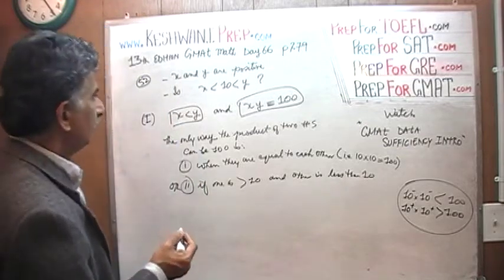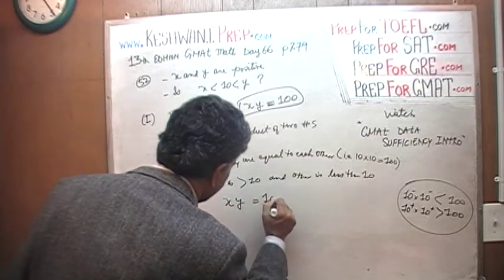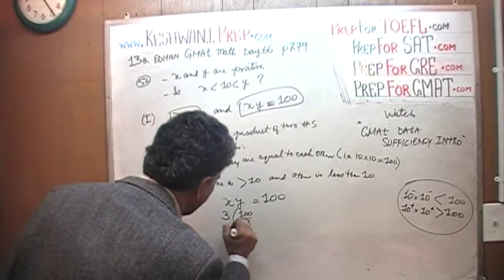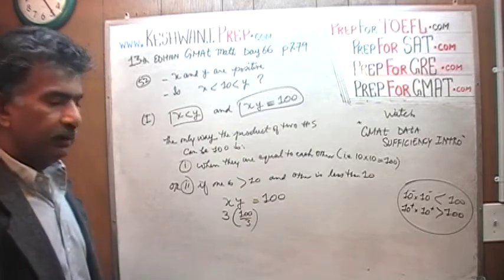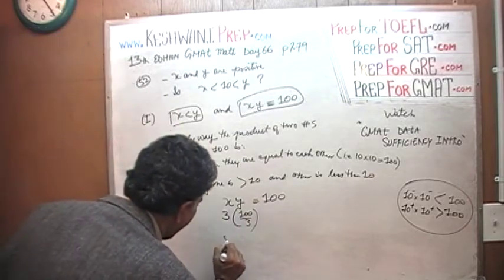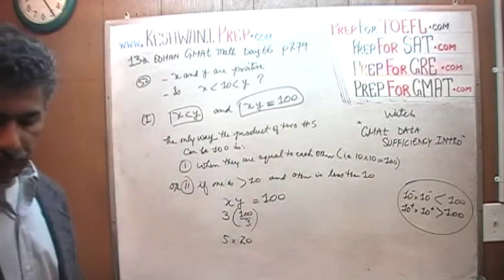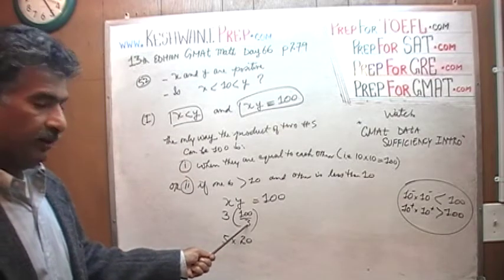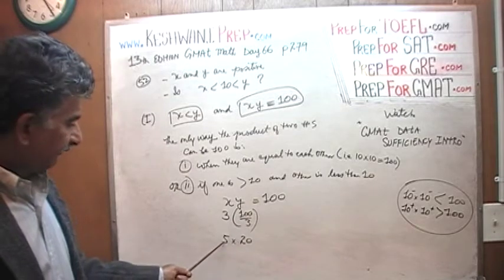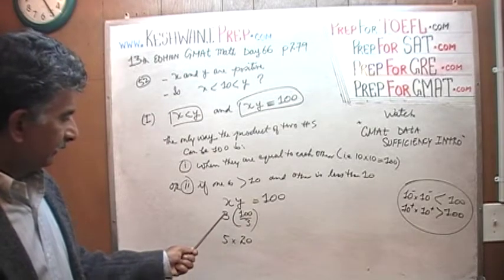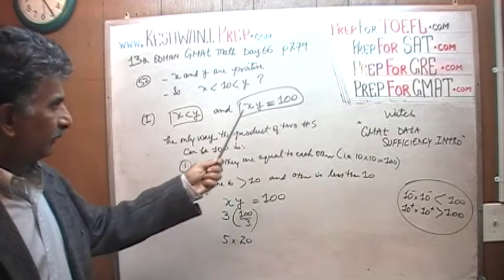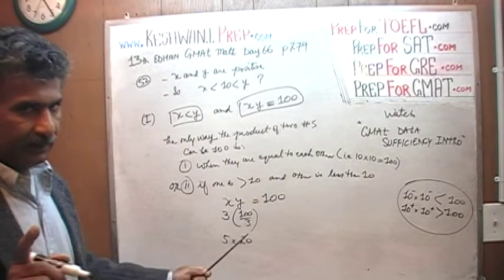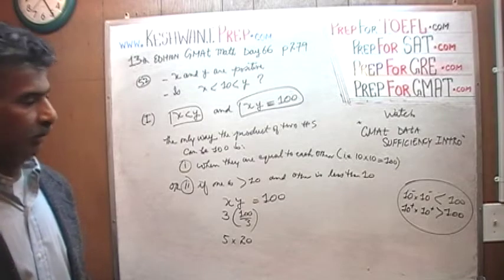For example, we know the product is 100. X times Y is 100. Maybe one is 3, in which case the other one would have to be 100 over 3. Voila! 3 times 100 over 3 is 100. Or maybe one is 5 and the other one is 20. In both cases, this satisfies this condition that X is less than Y. 3 is less than 100 over 3, and 5 is less than 20. In both cases, as we can see, if one is less than the other and if their product has to be equal to exactly 100, one has to be less than 10, the other one has to be more than 10. They cannot be both less than 10. They cannot be both more than 100, as we can see there.